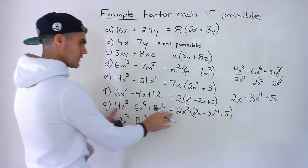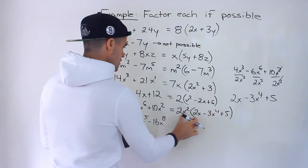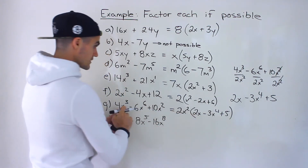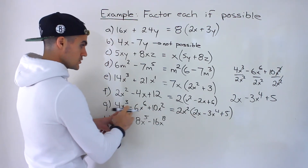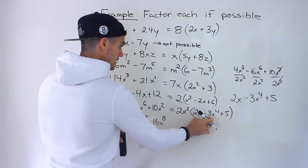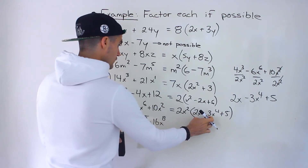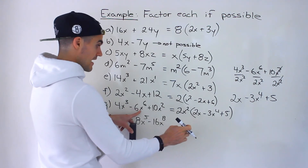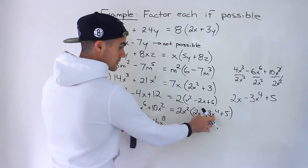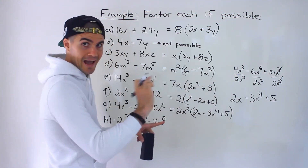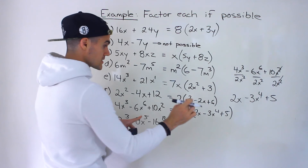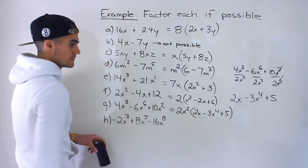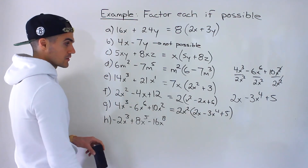Checking the answer: 2x² times 2x gives 4x³; 2x² times negative 3x⁴ gives negative 6x⁶ (adding exponents: 2 plus 4 equals 6); and 2x² times 5 gives 10x². That confirms our answer for part G.